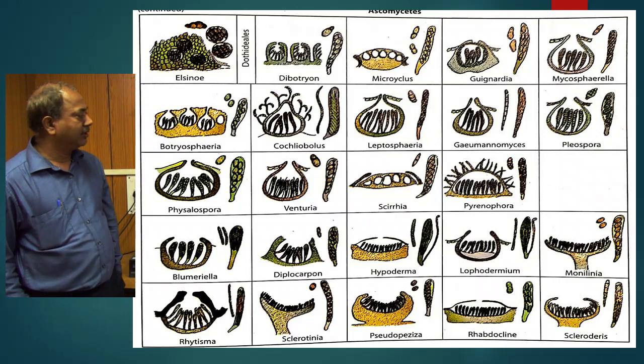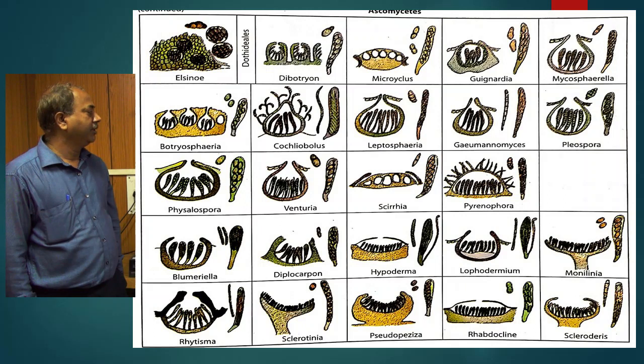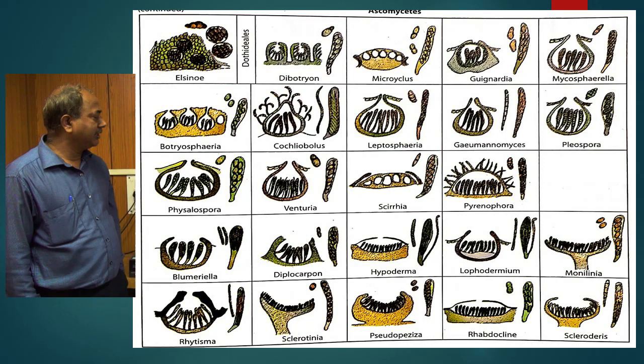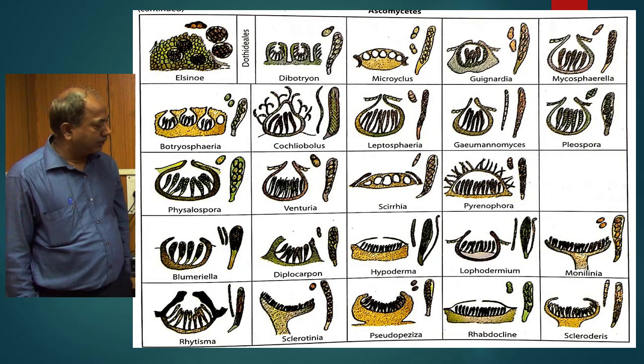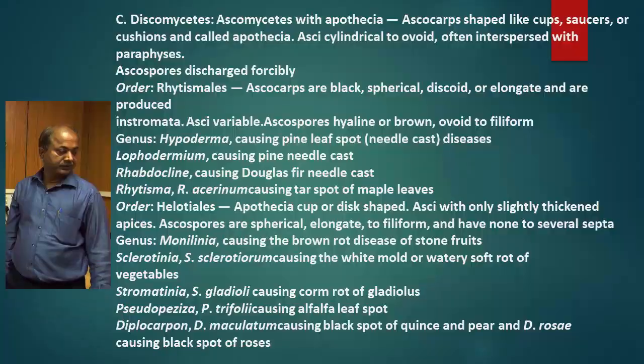In the pictorial diagram, under Ascomycota, the genera include Elsinoe, Dibotryon, Microsphaerella, Guignardia, Venturia. Under Cup Ascomycotina: Blumeria, then Diplocarpon, then Hypoderma, then Lophodermia, then Monilinia, Rhytisma, Sclerotinia — these are the pathogens.